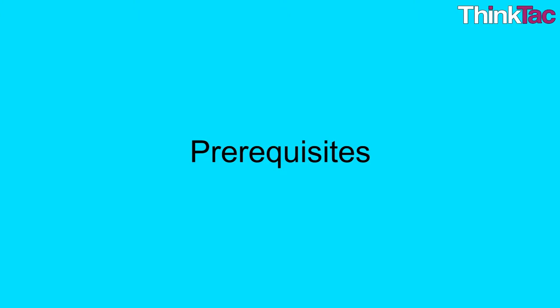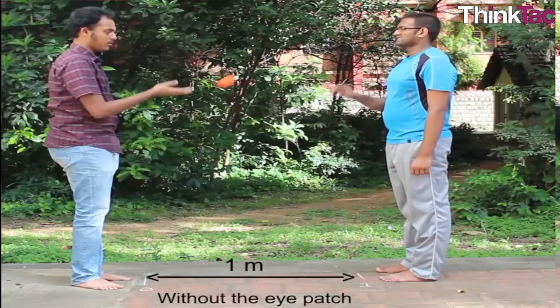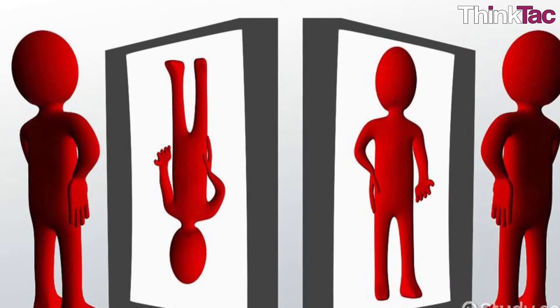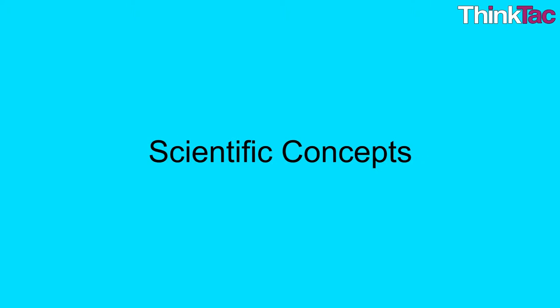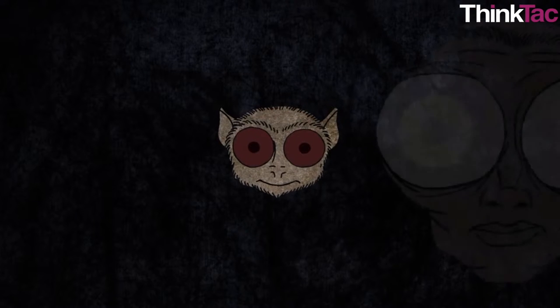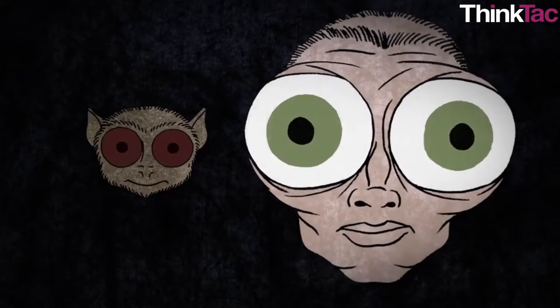Students should have the basic motor skills to throw and catch a ball. Students should be familiar with a few scientific concepts like image formation by lenses and evolution. Most animals that we come across have two eyes.